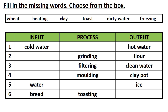So under input kids need to write wheat. For question number 3, process is filtering and output is clean water, so input is dirty water. For question number 4, process is molding and output is clay pot, so the input will be clay. Question number 5: input is water and output is ice, so the process will be freezing. Question number 6: input is bread and process is toasting, so the output is toast.